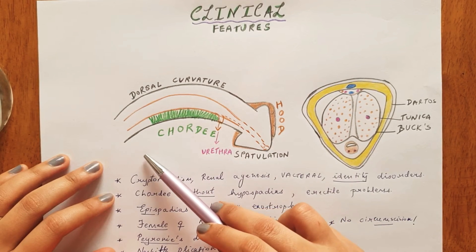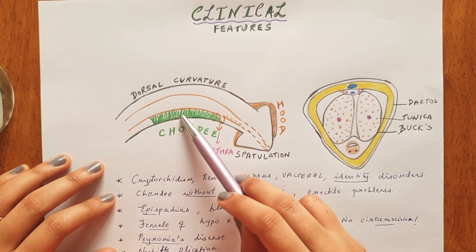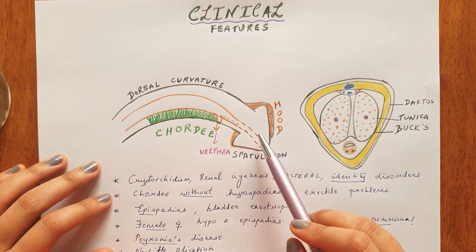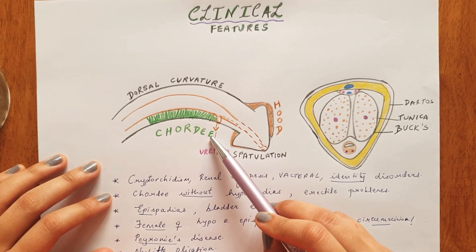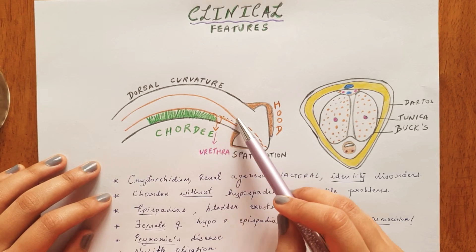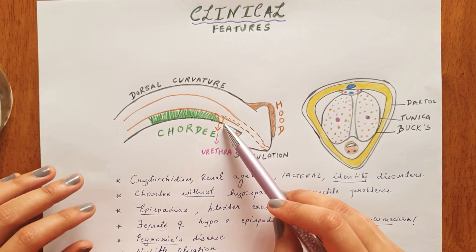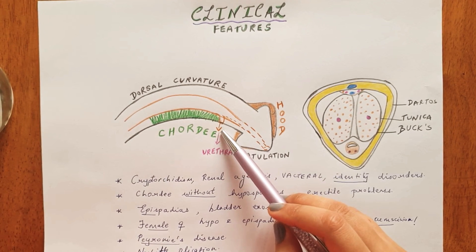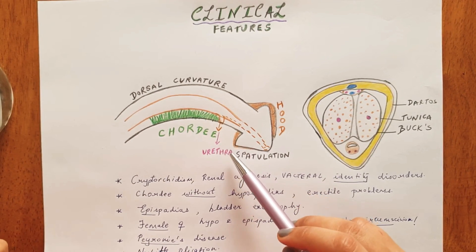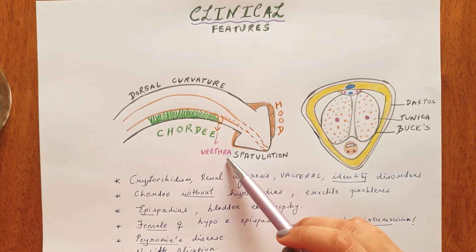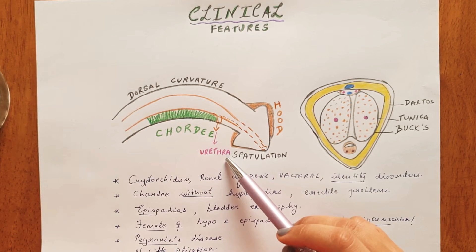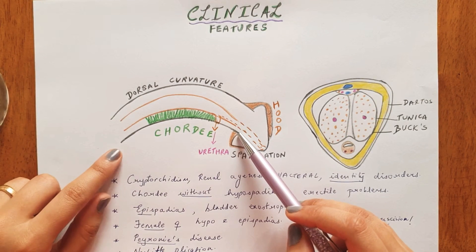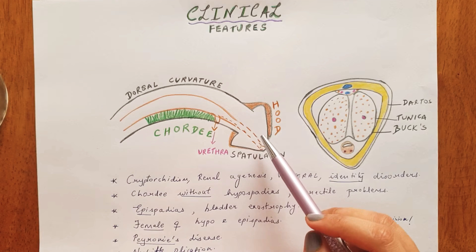Imagine the urethral opening has to travel from the base to the tip of the glans during development, but something is holding it back. These fibrotic strands restrict the urethra from reaching the tip and cause the abnormal opening somewhere proximally. This is where the classification of hypospadias is based — the urethral opening can occur anywhere from the glandular and subcoronal to the perineal region, as discussed in my previous video.